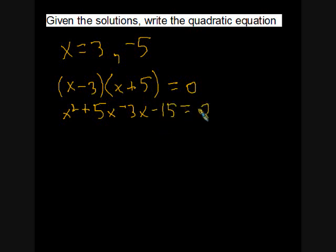And the whole thing is still equal to zero. And then we'll just go ahead and combine the two terms in the middle. That gets us x squared plus 2x minus 15 equals zero. And this is the quadratic equation if I've been given the solutions 3, negative 5.